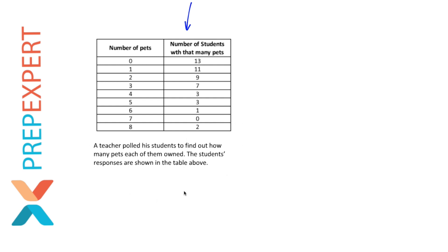It says a teacher polled his students to find out how many pets each of them owned. The students' responses are shown in the table above. When you see a histogram table like this, most often what they'll ask you for are aspects of a data set or characteristics of a data set. If you want to know more about these characteristics of a data set, like mean, median, mode, range, and standard deviation, check out my other video on that topic.